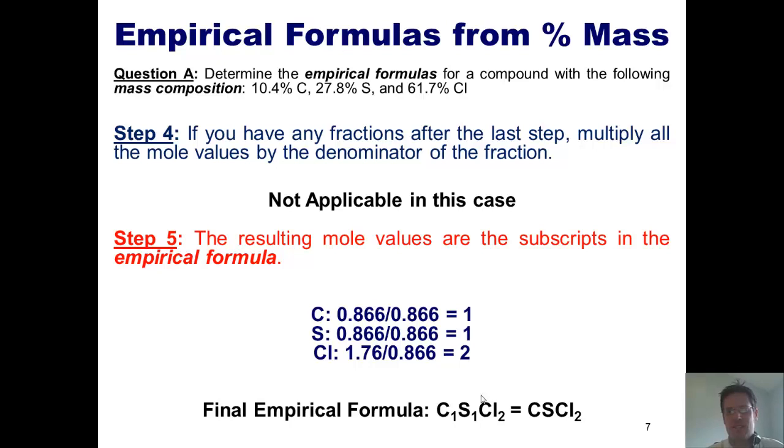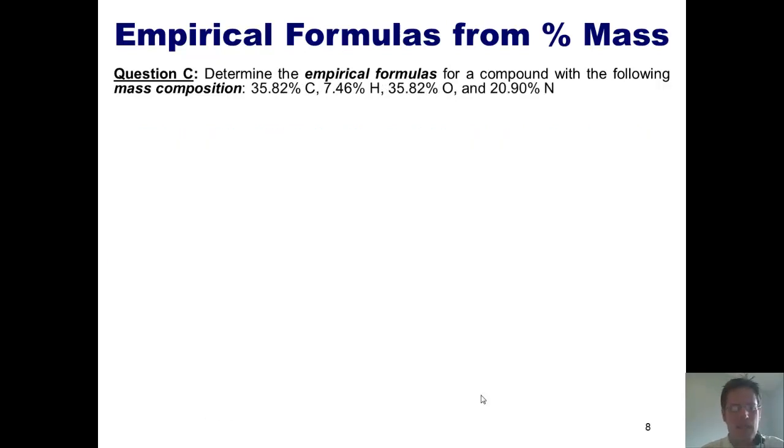Does that make sense? I hope so. If not, take a look at the next problem. We've now been given a percent mass composition of 35.82% carbon, 7.46% hydrogen, 35.82% oxygen, and 20.90% nitrogen. What's the empirical formula?